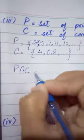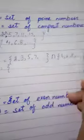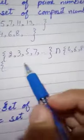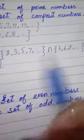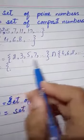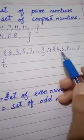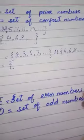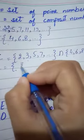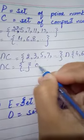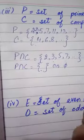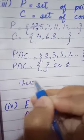We can find the intersection P intersection C is equal to... so this will be empty set. You can write it, or you can write phi.